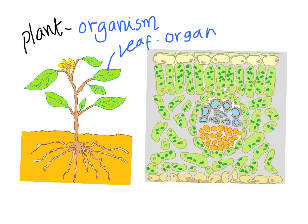We are going to be looking at how the leaf is made up of different types of tissues. Here, as you can see, there are all the same type of cell — a group of cells with similar structure and function. We know that is a tissue, so that is a specific type of tissue.